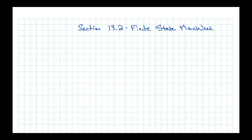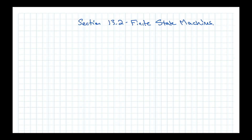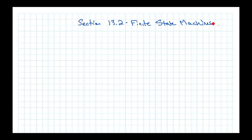Hello everybody. Today we're going to be looking at section 13.2 in your book. We're done with chapter 10 on graph theory and now we're into chapter 13, skipping ahead. This is 13.2 and not 13.1 — 13.1 covers languages and grammars, which is less interesting and not required, so we're skipping it and going straight to 13.2: finite state machines.